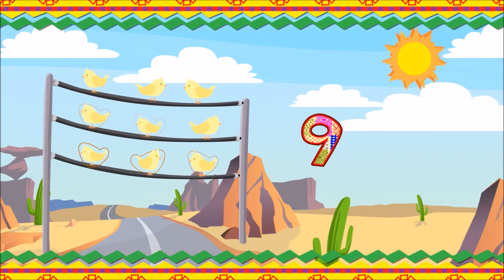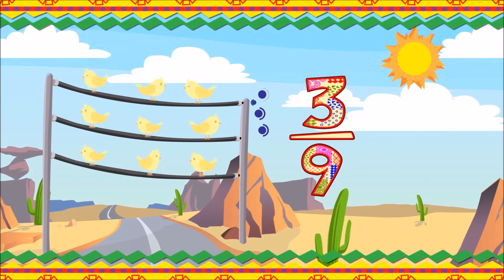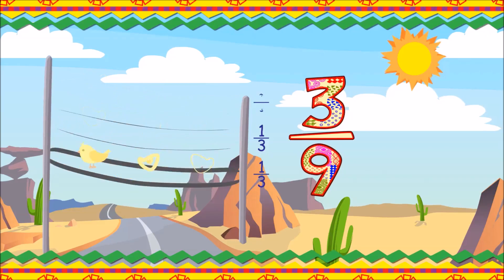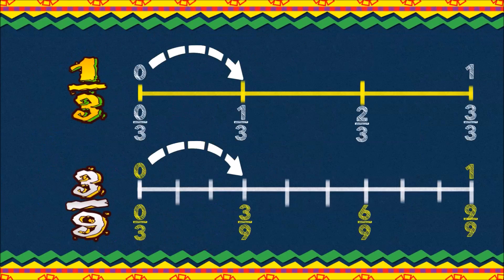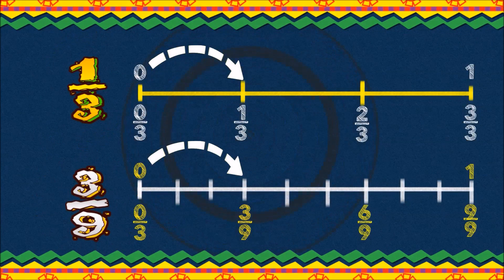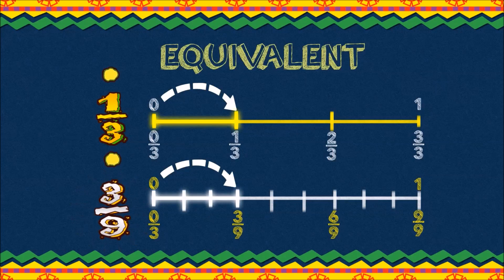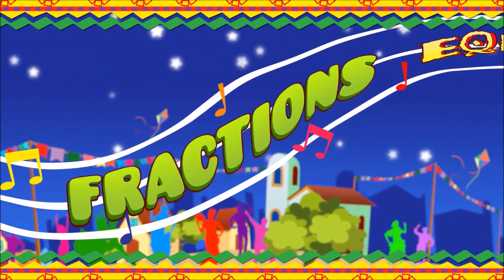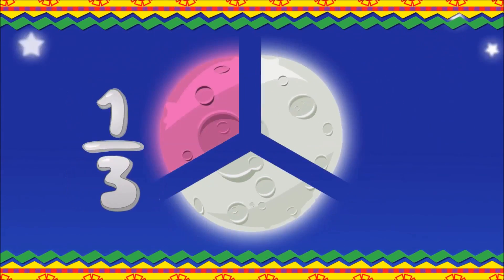Once upon a time there were nine canaries on telephone wires, sitting down in threes. Each wire contained one-third of the birds, so three-ninths is equivalent to one-third. Drawing one-third and three-ninths on the number line shows one-third equals three parts out of nine — therefore equivalent is the word that describes three-ninths and one-third. Equivalent fractions is the name for fractions whose values are the same.